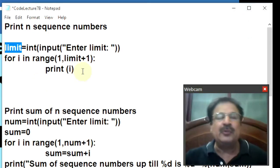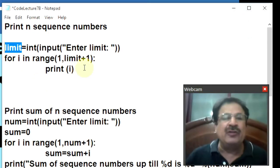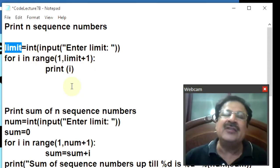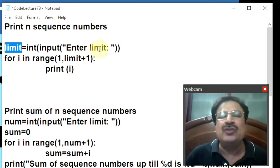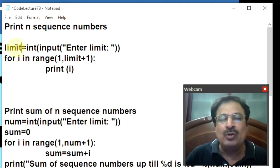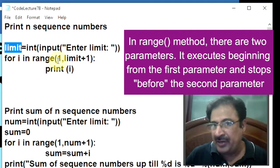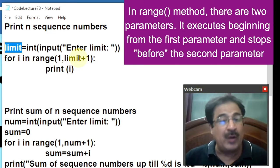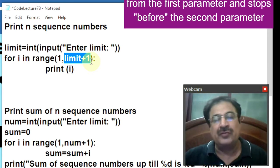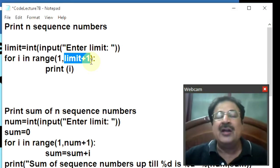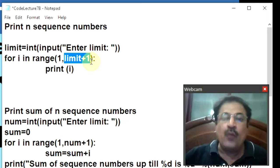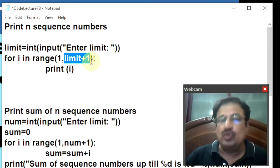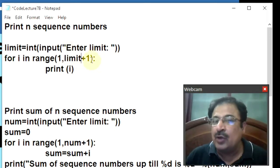It will convert the string into integer format, and the value will be assigned to the limit variable. Suppose the user enters the limit as 10 — it will display the sequence number from 1 to 10. If the user enters 500, it will display from 1 to 500. The range method will go from 1 to limit plus 1, because the right-hand side of range is exclusive — it never includes that value. So we enter limit plus 1, that is 11, so the for loop runs up till 10. This plus 1 is very essential.